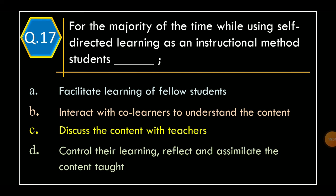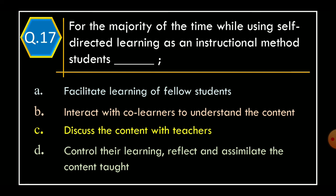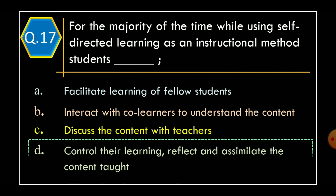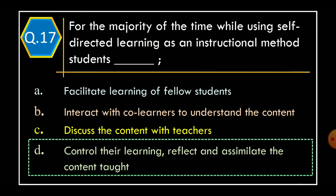Question 17. For the majority of the time, while using self-directed learning as an instructional method, students: Option A – Facilitate learning of fellow students. Option B – Interact with co-learners to understand the content. Option C – Discuss the content with teachers. Option D – Control their learning, reflect, and assimilate the content taught. The correct option is Option D: Control their learning, reflect, and assimilate the content taught.